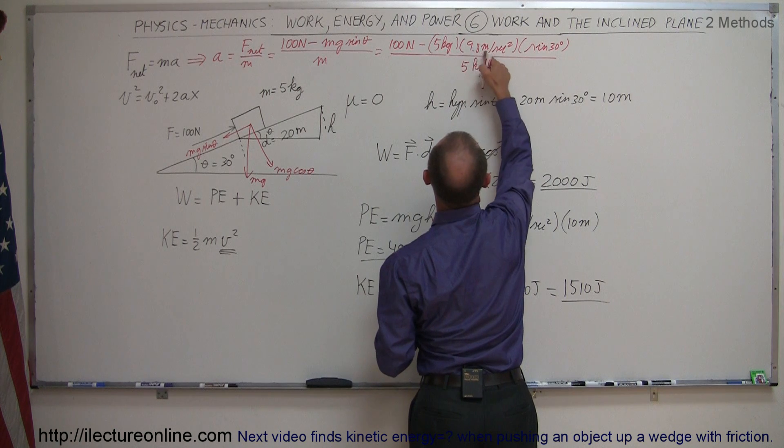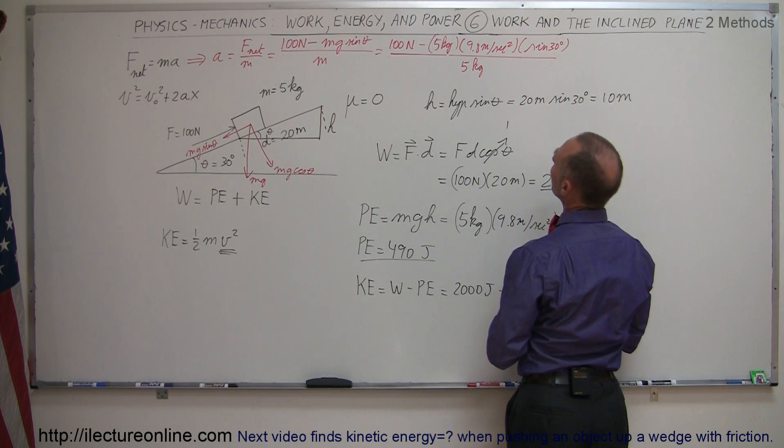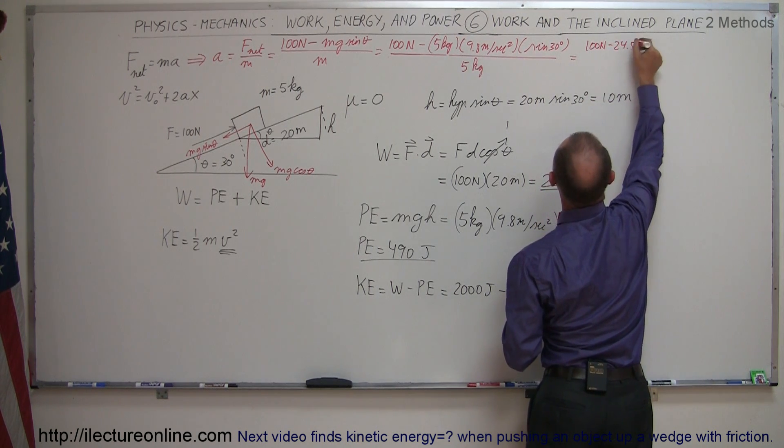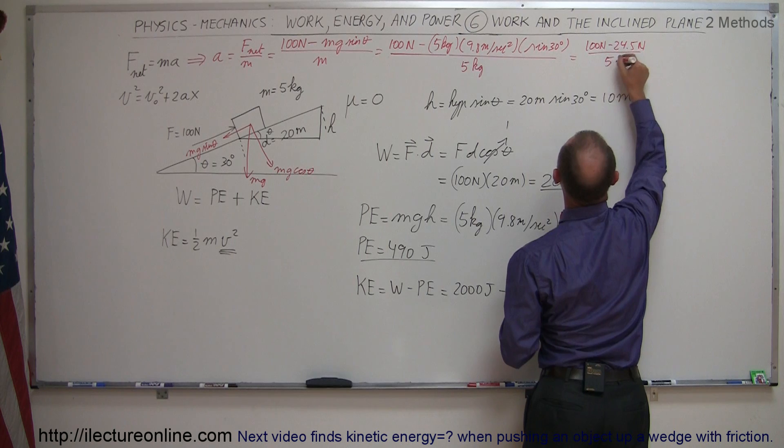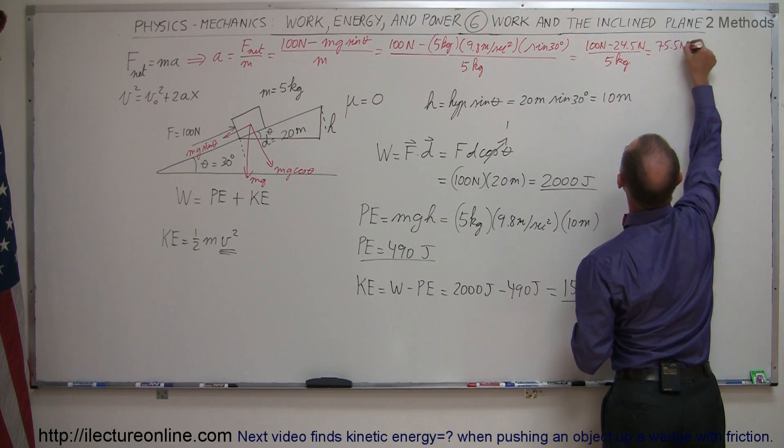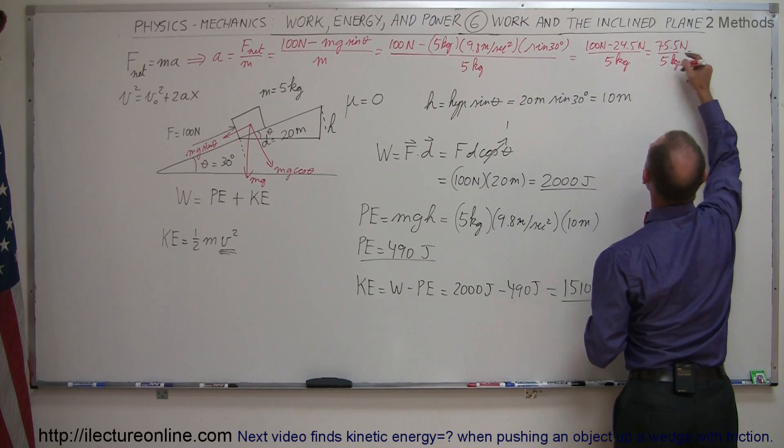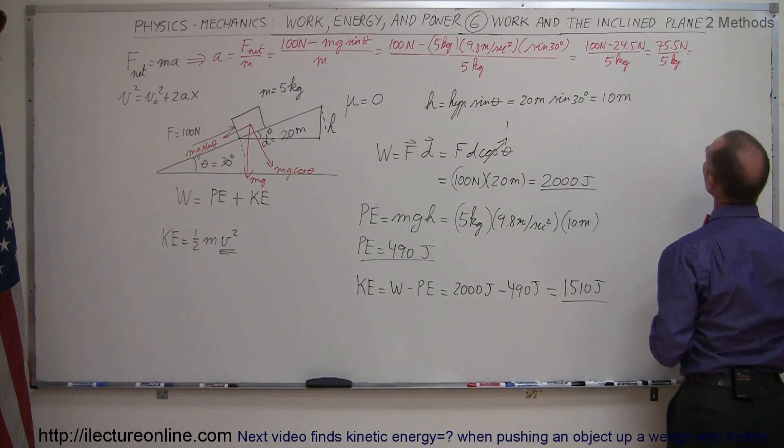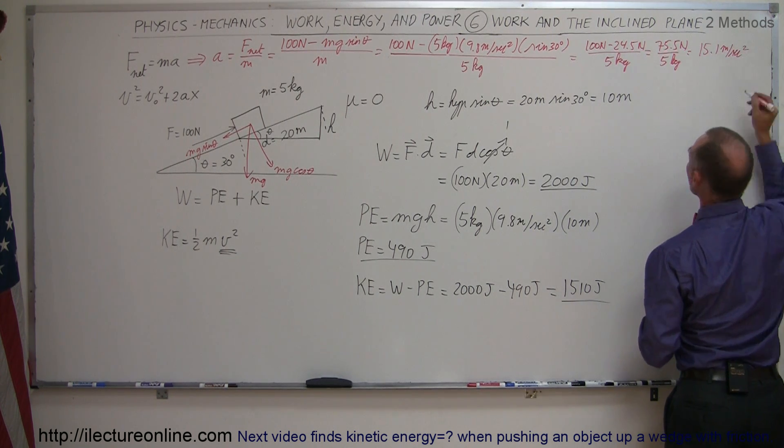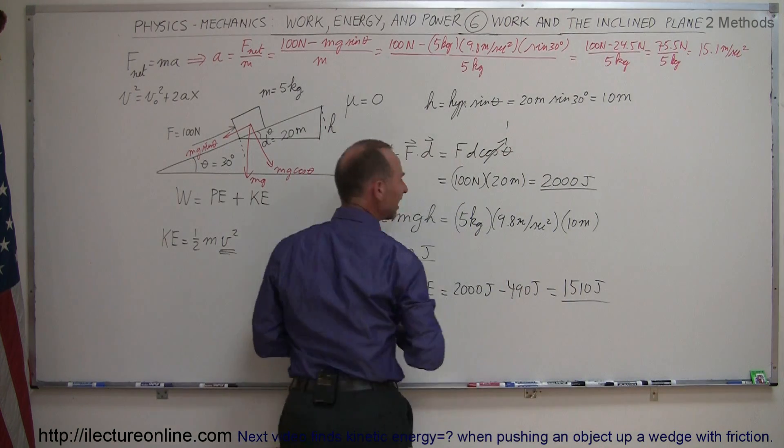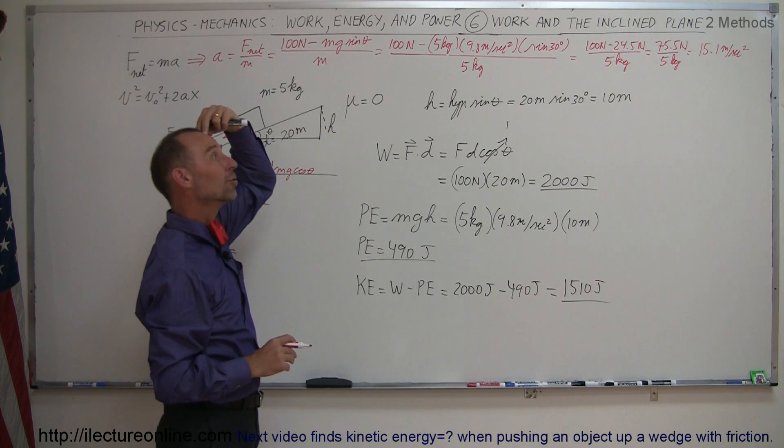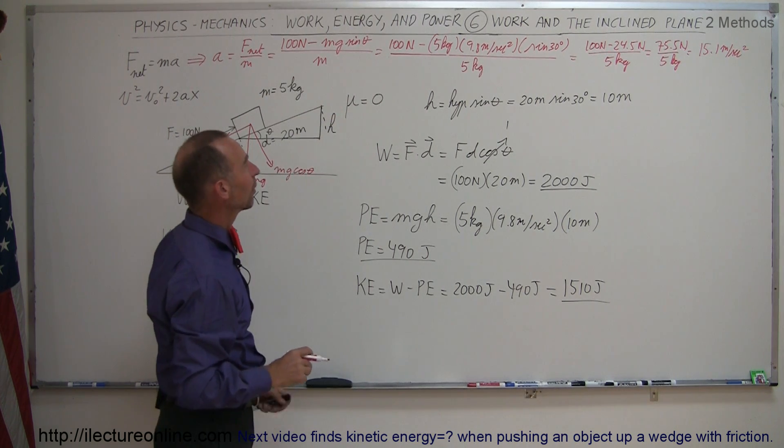Of course, that would be 45 times one-half, 49, that would be 24 and a half. So this is 100 newtons minus 24.5 newtons divided by 5 kilograms. And so this is equal to 75.5 newtons divided by 5 kilograms. And so that goes in there 15.1 times, 15.1 meters per second squared. Let me check that real quick, because I didn't use my calculator, and I make mistakes sometimes. So that's 49, half of 49 is 24 and a half. And that looks about right. Okay,